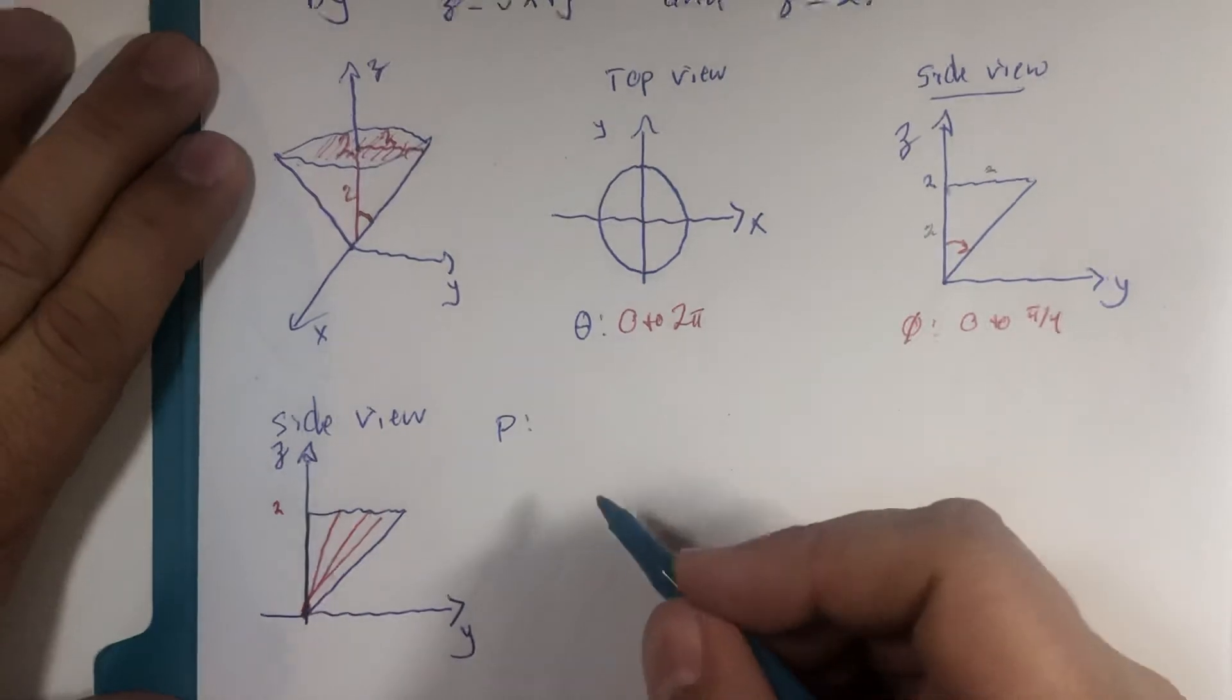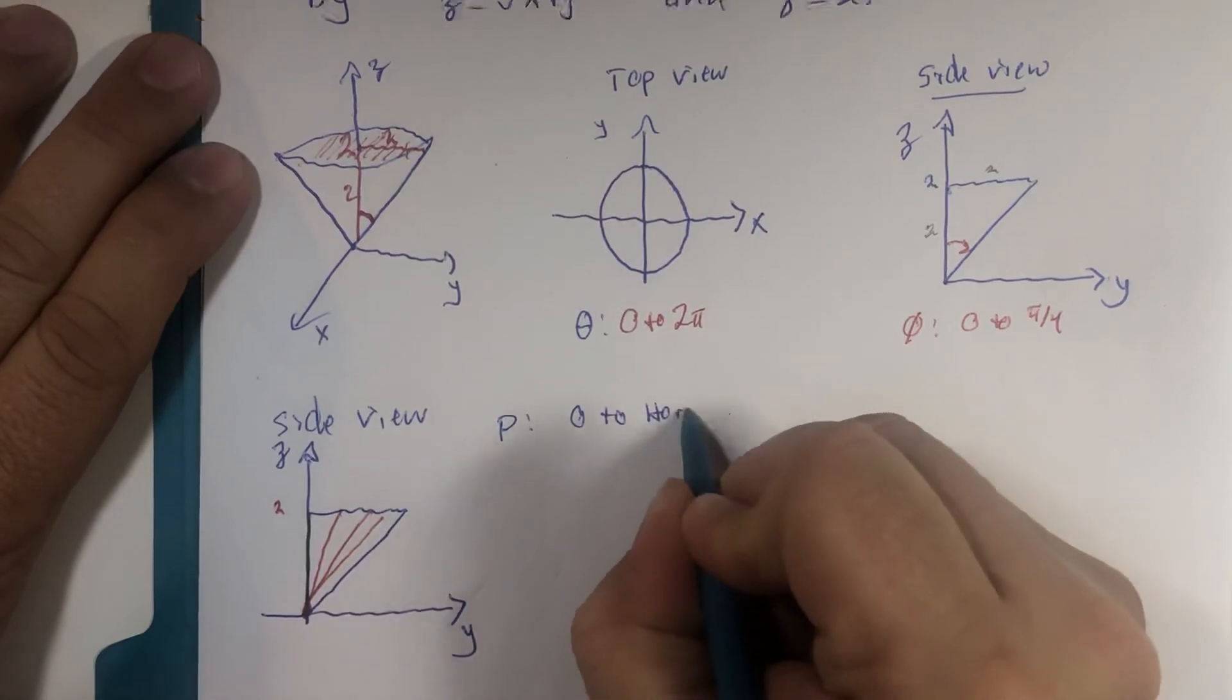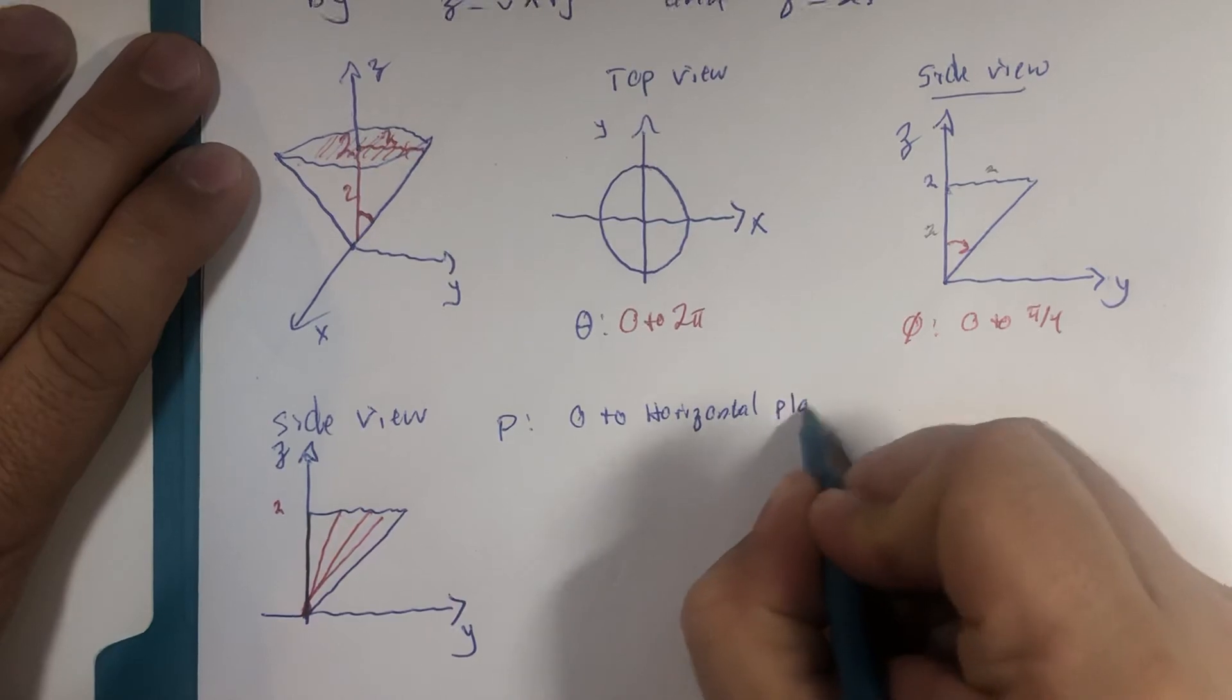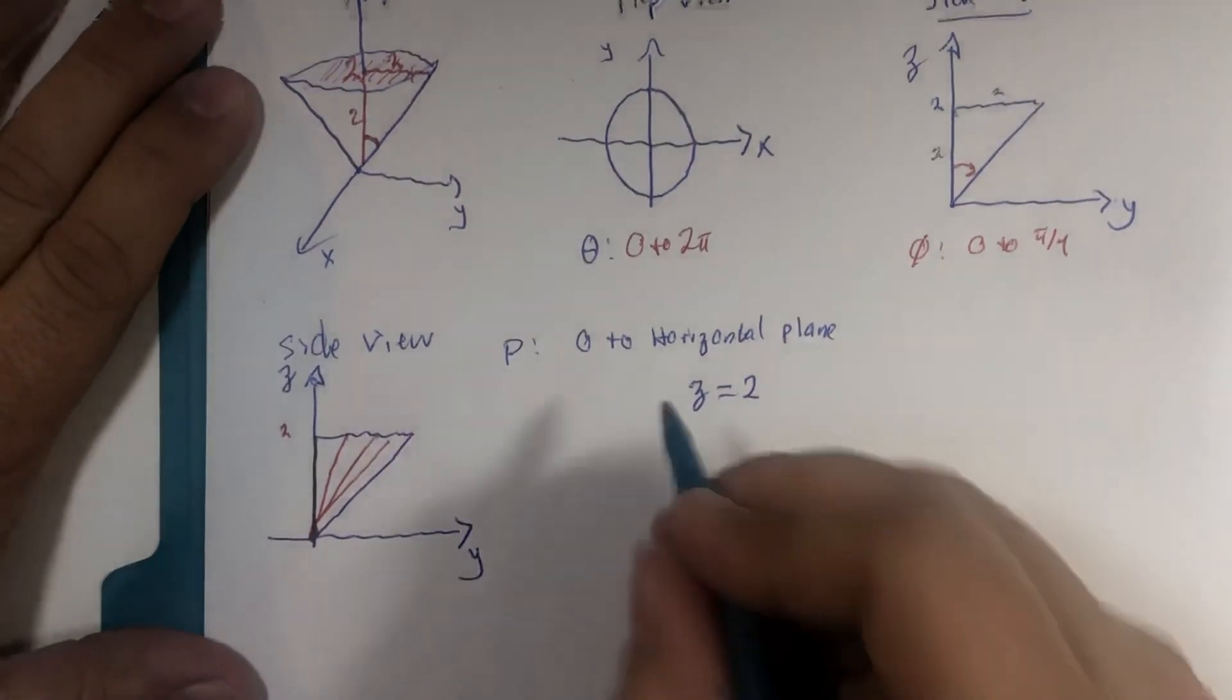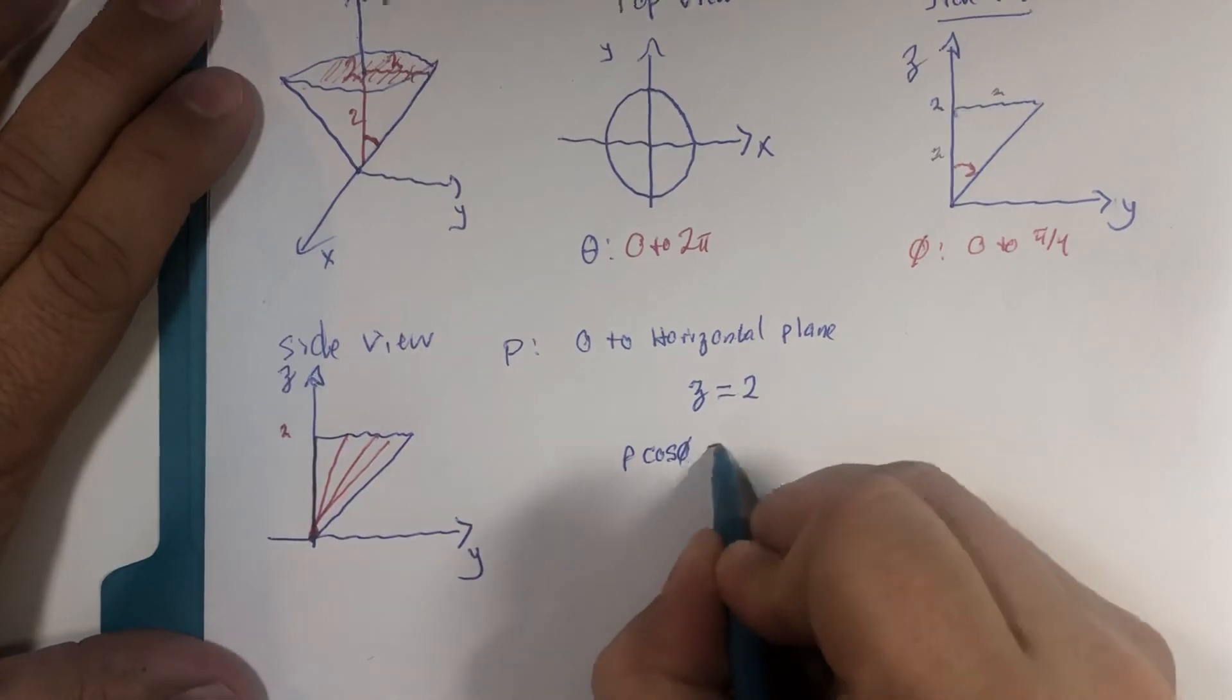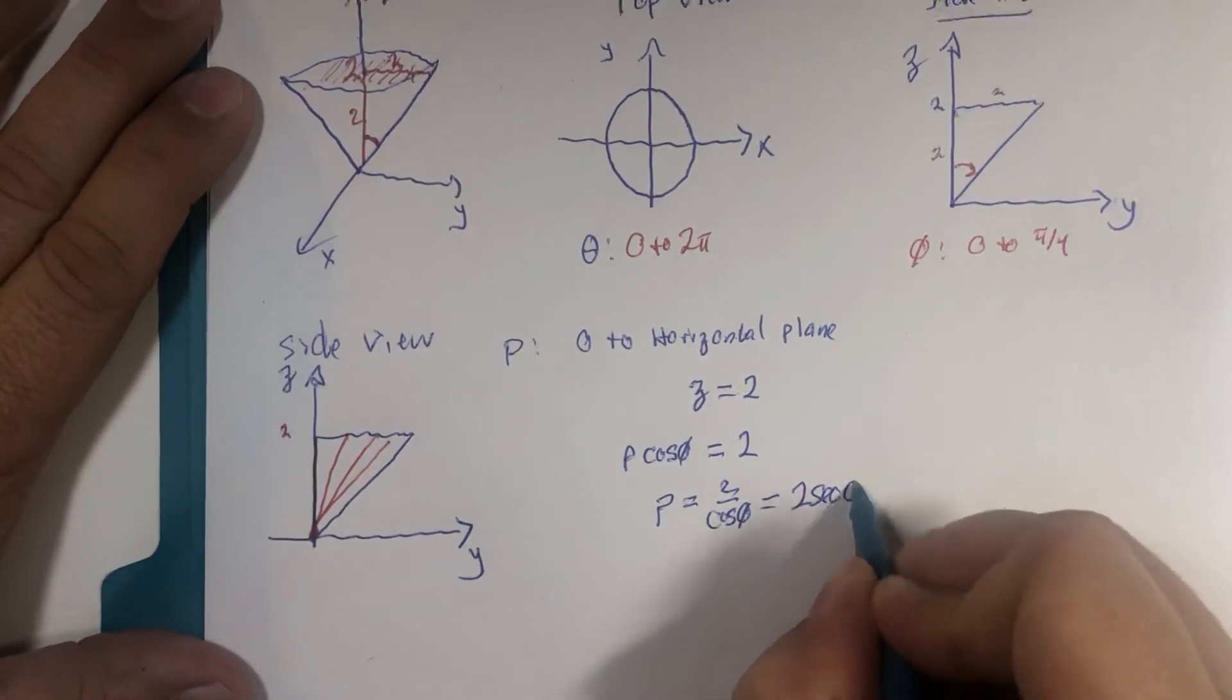A little background noise I can't avoid. So ρ goes from 0 to this horizontal plane which has the equation z equals 2. But z is ρ cos(φ). And in ρ equals form, that's 2 over cosine, which is 2 times secant.